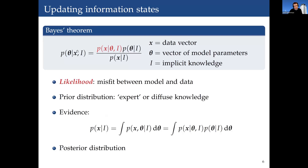These are Thomas Bayes and Pierre-Simon Laplace, founders of Bayesian probability. Bayes' theorem is the important result that allows you to invert conditional probabilities. Here x would be data and θ would be a vector of model parameters you want to estimate. In the Bayesian way, we want to obtain the posterior distribution — the probability distribution of the parameter vector after having observed the data.